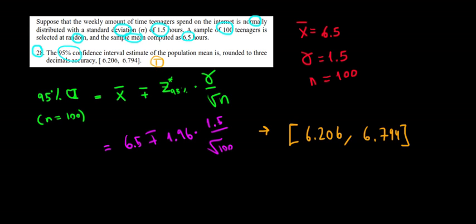Before finishing the question, let's interpret this. What does this mean? It means that in 95% of random samples with a size of 100 observations each,